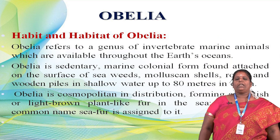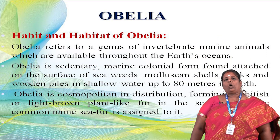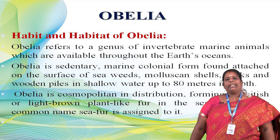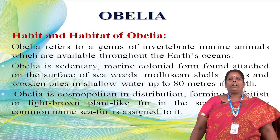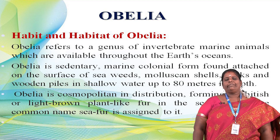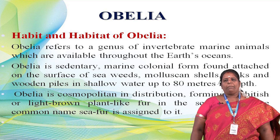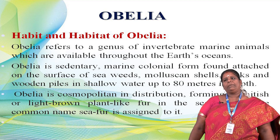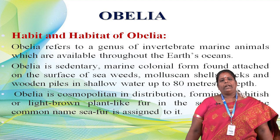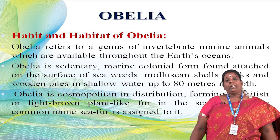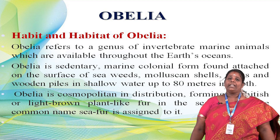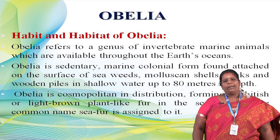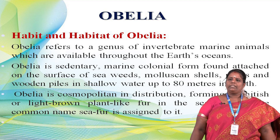Now, what are the habit and habitat of Obelia? We need to know where the animal lives and what its food habits are. Obelia is a marine invertebrate. Most Obelia species live in marine environments, though a few species occur in fresh water. It is found throughout the earth's oceans. Obelia is sedentary in nature — meaning it attaches to a substratum. Marine colonies are found attached to the surfaces of seaweeds, molluscan shells, rocks, wooden piles, and in shallow water.